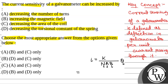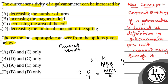From here, we will have θ/I — that is, current sensitivity — which will be equal to NAB/K. So from here, we can see that the current sensitivity of the galvanometer is equal to NAB/K.